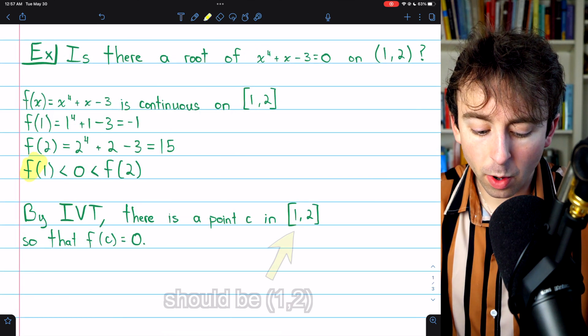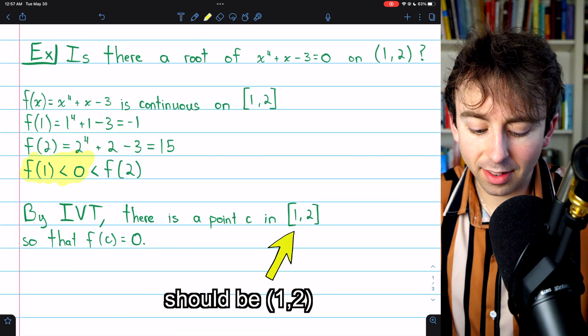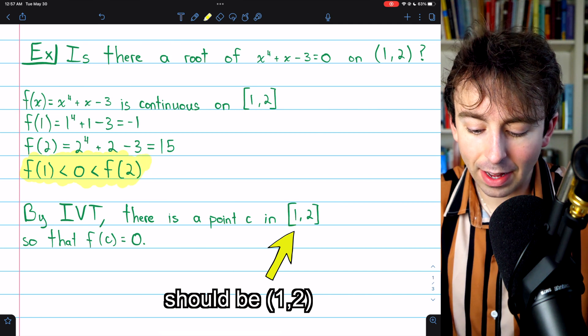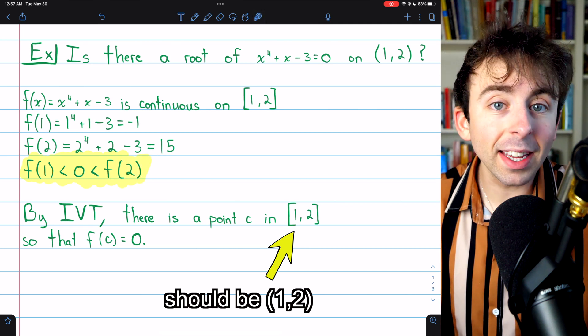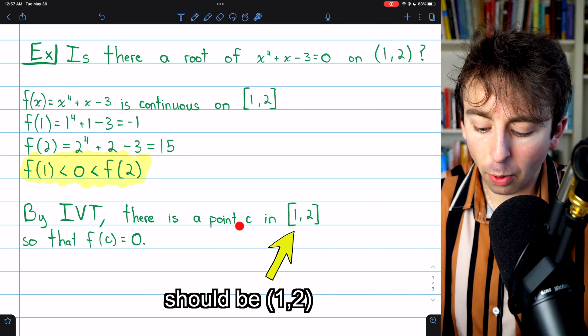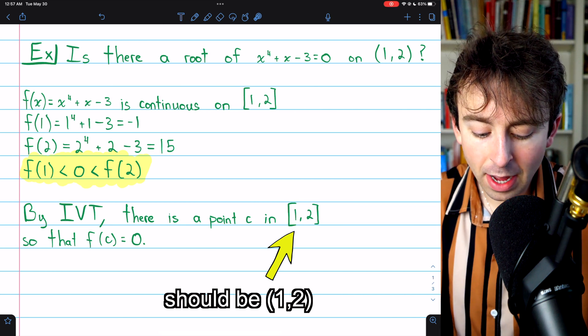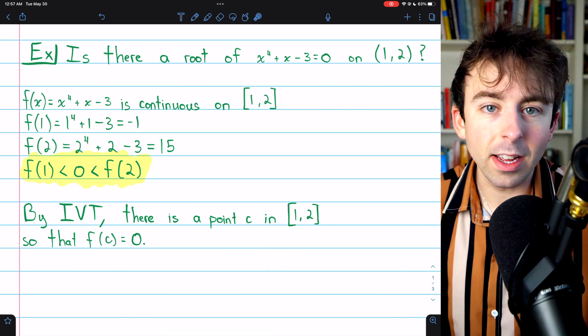So we found that f(1), the starting value, was less than 0, which was less than the ending value, f(2). So by the intermediate value theorem, there is a point c in this closed interval, so that f(c) = 0.